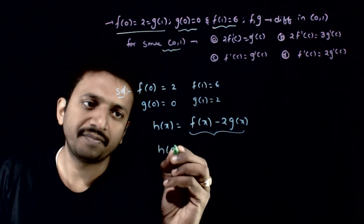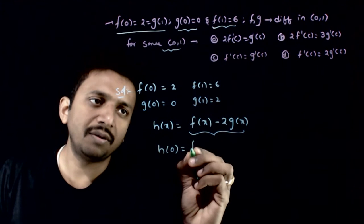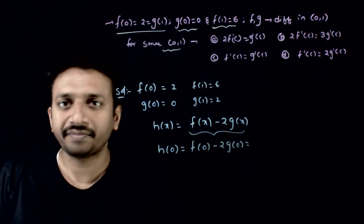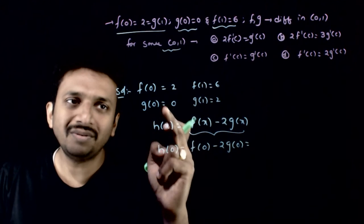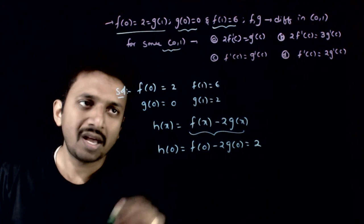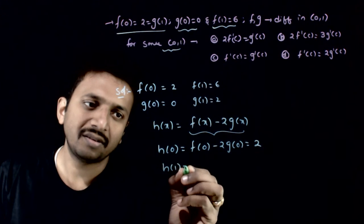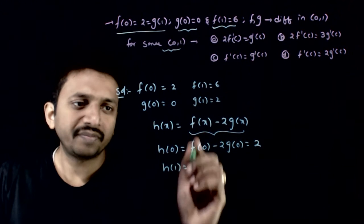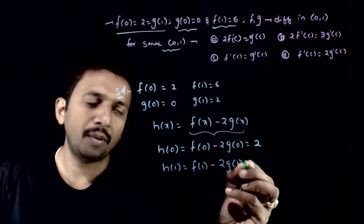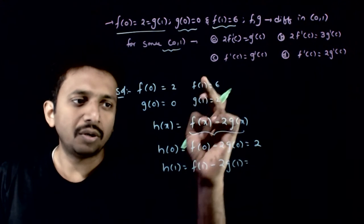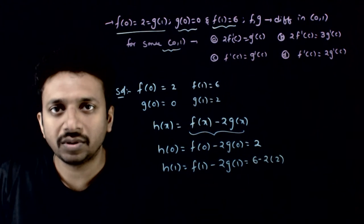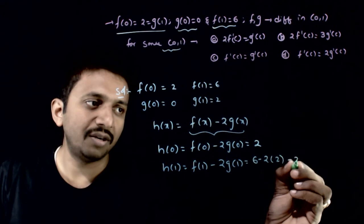What is h(0)? h(0) = f(0) - 2·g(0) = 2 - 2×0 = 2. And what is h(1)? h(1) = f(1) - 2·g(1) = 6 - 2×2 = 6 - 4 = 2.